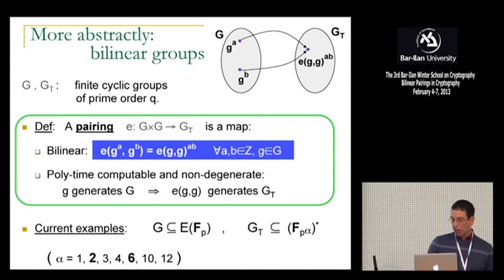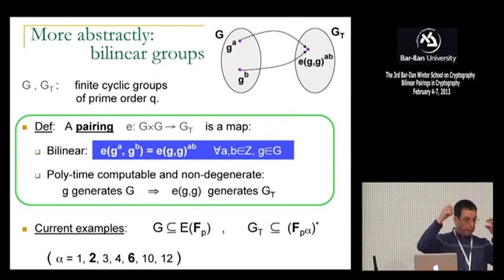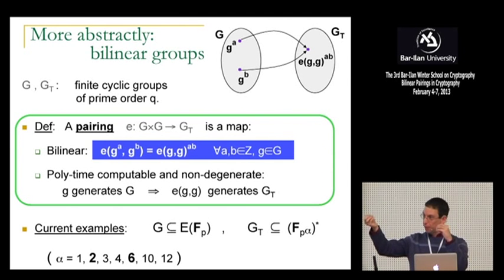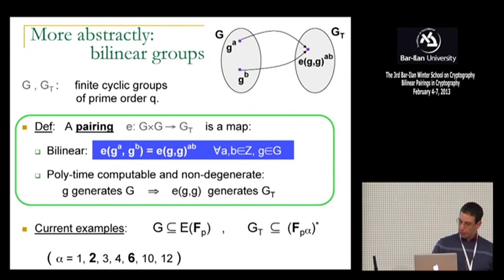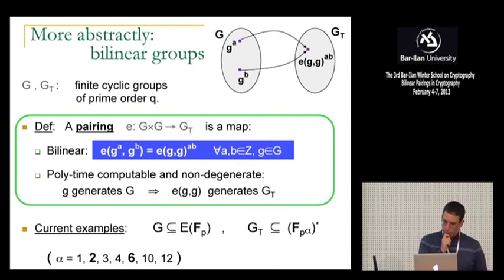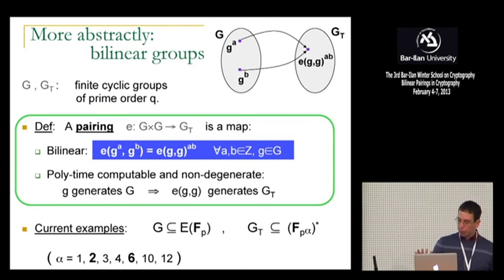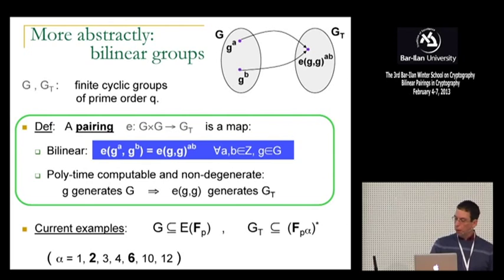Non-degeneracy is a very important property requirement for these bilinear groups because, clearly, a bilinear map that maps everything to one clearly is bilinear, but it's not a very useful map for any practical purposes. What we require is that if G is a generator of the source group, then the pairing of G and G is a generator of the target group. That's all we mean by non-degeneracy. The examples essentially come from elliptic curves where the source group is the group of points of an elliptic curve, and the target group basically lives in some extension field of FP over which the curve is defined.